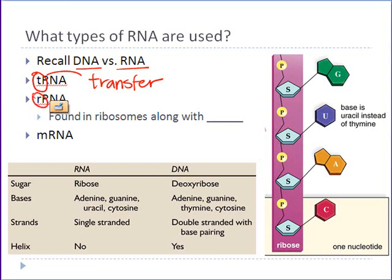Another type of RNA is rRNA, where the 'r' refers to ribosomal. This is RNA found inside of ribosomes. Ribosomes are tiny little bundles of molecules that assist in the manufacture of a protein, and ribosomal RNA is found inside those ribosomes along with a little bit of protein.